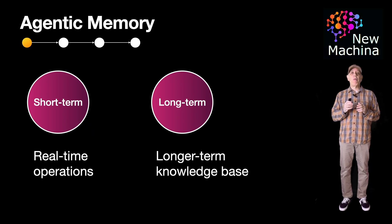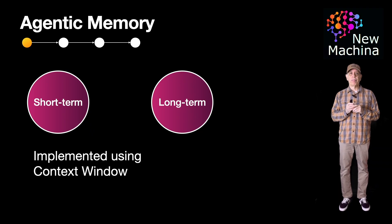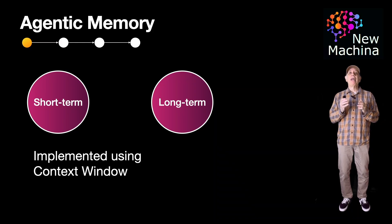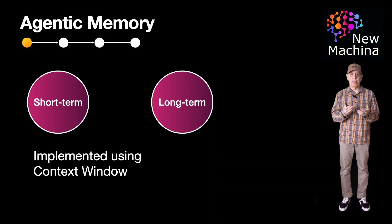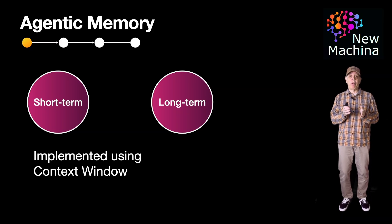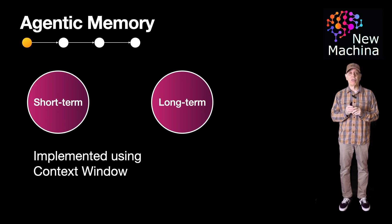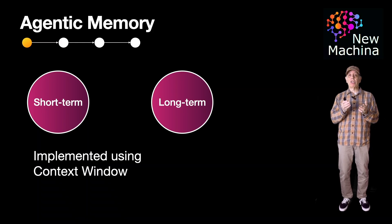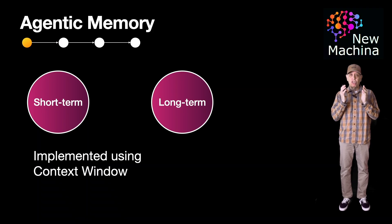So how is short-term memory typically implemented? Well, short-term memory is often implemented using context windows, which allow the agentic system to maintain continuity in real-time tasks. Agentic systems often keep summaries in the context to efficiently manage and retrieve relevant information during interactions. Simply put, short-term memory acts like a temporary workspace, holding information just long enough to complete a task.